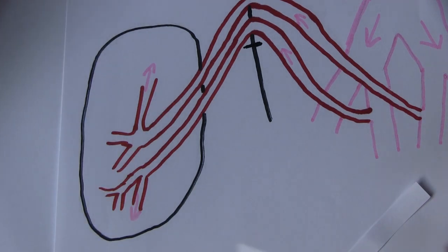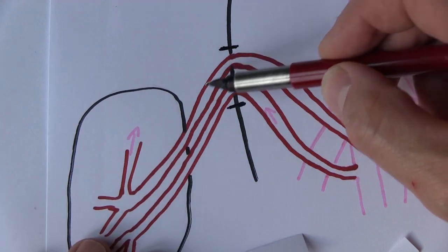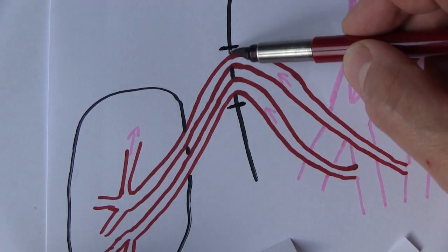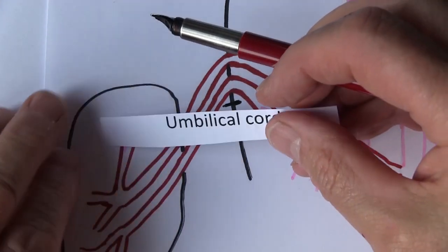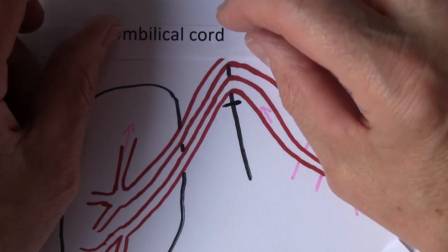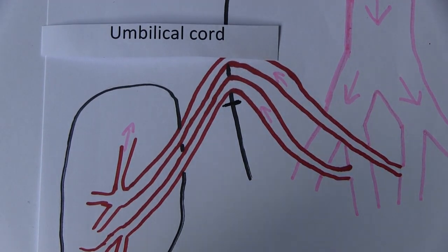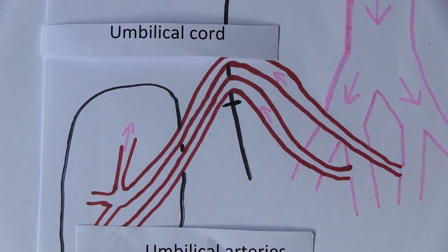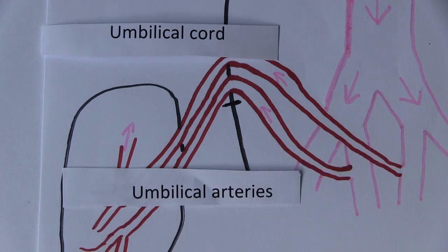From the umbilicus to the placenta is the umbilical cord. The umbilical cord contains the umbilical arteries - and as we'll see later, the umbilical vein as well. The blood goes to the placenta to be oxygenated from the mother's circulation via the umbilical arteries.